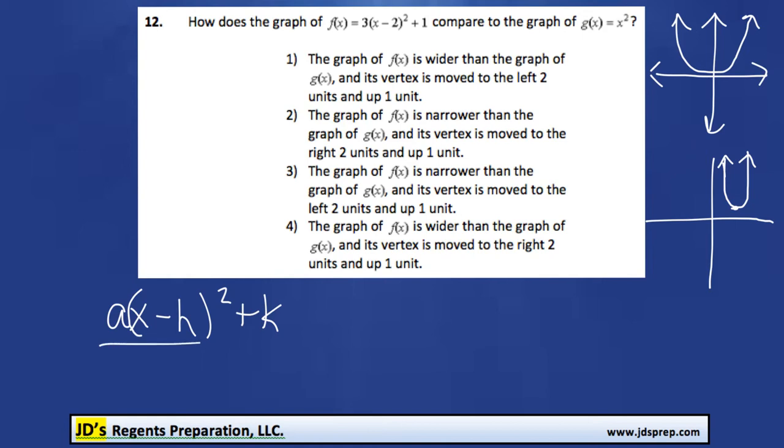However, if you are familiar with this format of equation where h and k represent the vertex, you should know that h is the value of it moving left or right. And because it's x - 2, that means h equals positive 2 because it's being subtracted here. That means it's going to be moving 2 to the right.